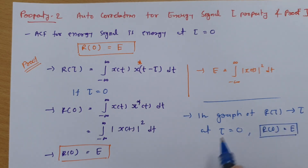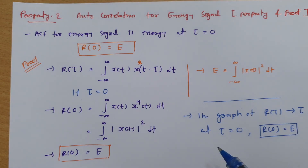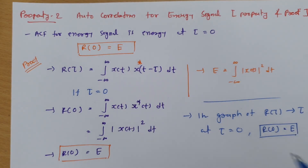Here one can understand that r(τ) at tau equals 0 is the energy of the signal. I hope that you have understood this session. Thank you so much for watching this video.